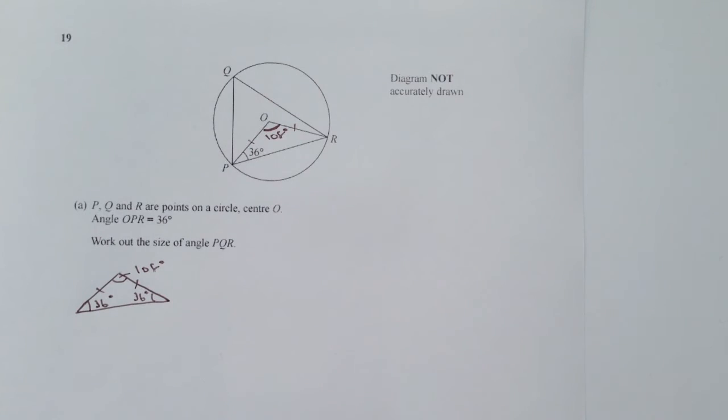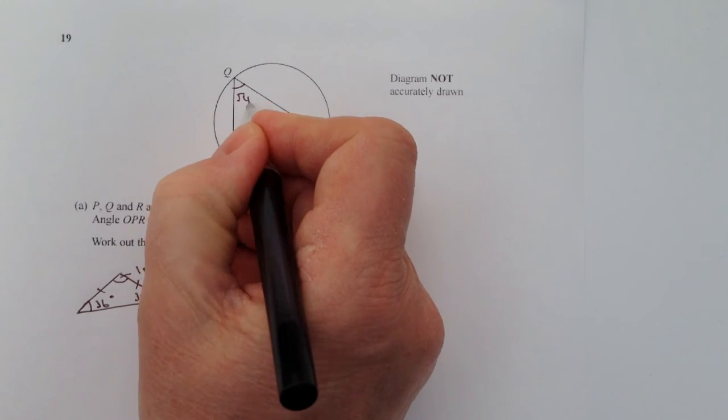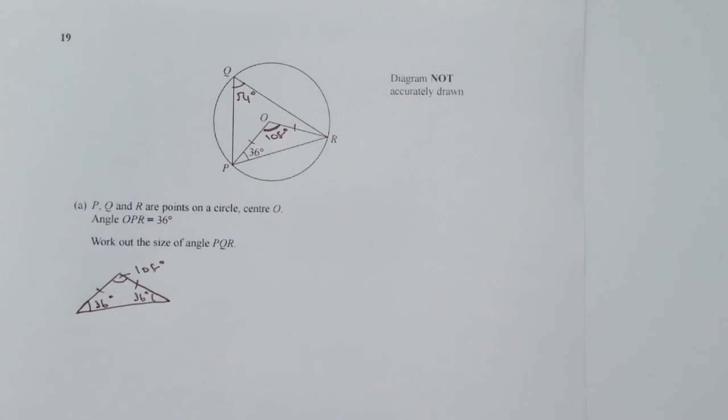...is half the value of 108, so it means that PQR is 54 degrees. Okay, and that will answer this particular question, the angle PQR is 54 degrees.